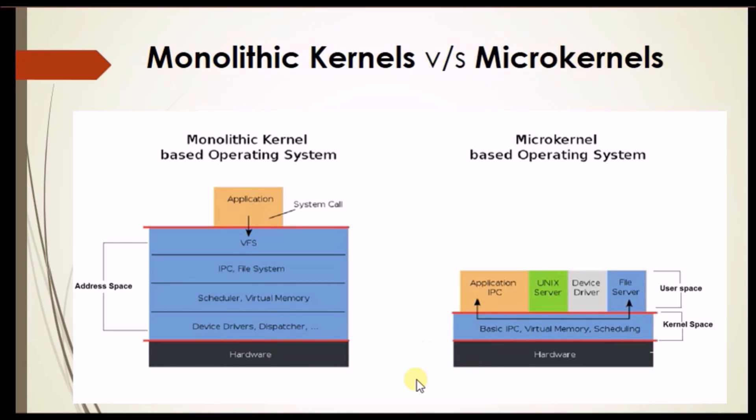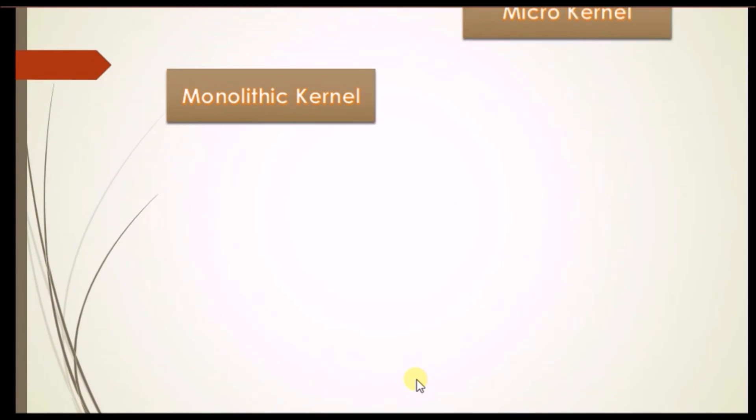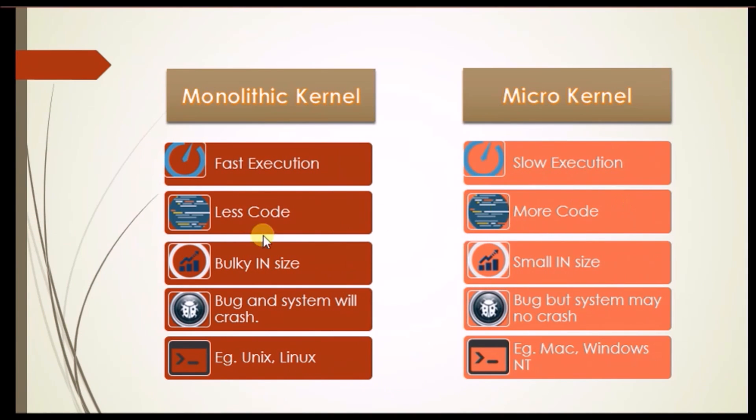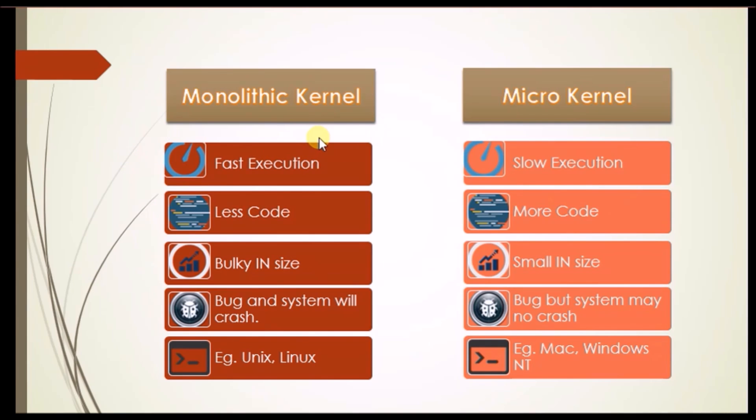So at the last, I want to sum up the whole things about this video. So in monolithic kernel, there is fast execution and the microkernel has slow execution. The monolithic kernel has less code and microkernel has more code. The monolithic kernel is bulky in size, the microkernel is small in size. If the monolithic kernel catches any bug, the whole system will crash. But in microkernel, if the bug catches, the system may or may not be crashed.